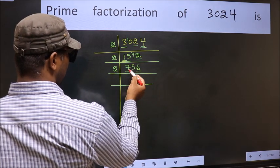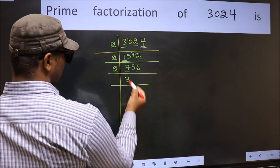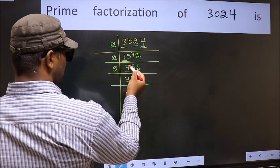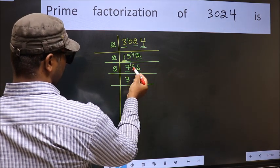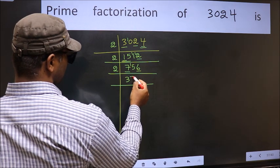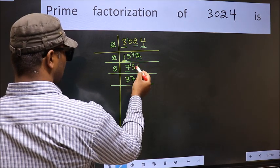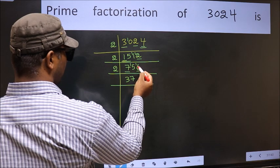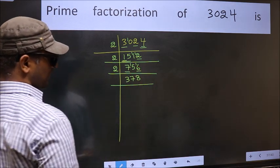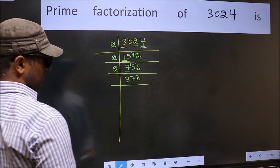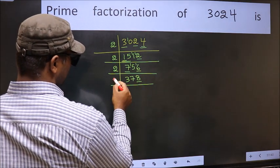First number 7 — a number close to 7 in the 2 table is 2 times 3 is 6. 7 minus 6 is 1, carried forward 15. A number close to 15 in the 2 table is 2 times 7 is 14. 15 minus 14 is 1, carried forward 16. When do we get 16 in the 2 table? 2 times 8 is 16. Now the last digit is 8, so take 2.